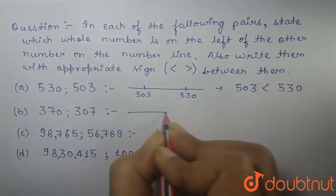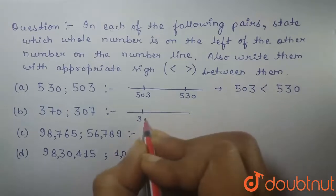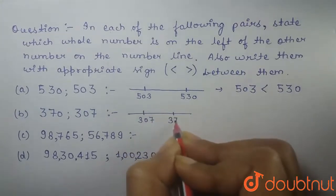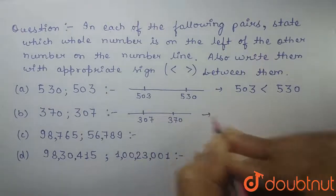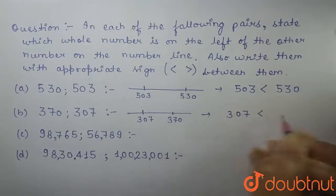If we plot 370 and 307 on a number line, 307 comes on the left side of 370. So, 307 is less than 370.